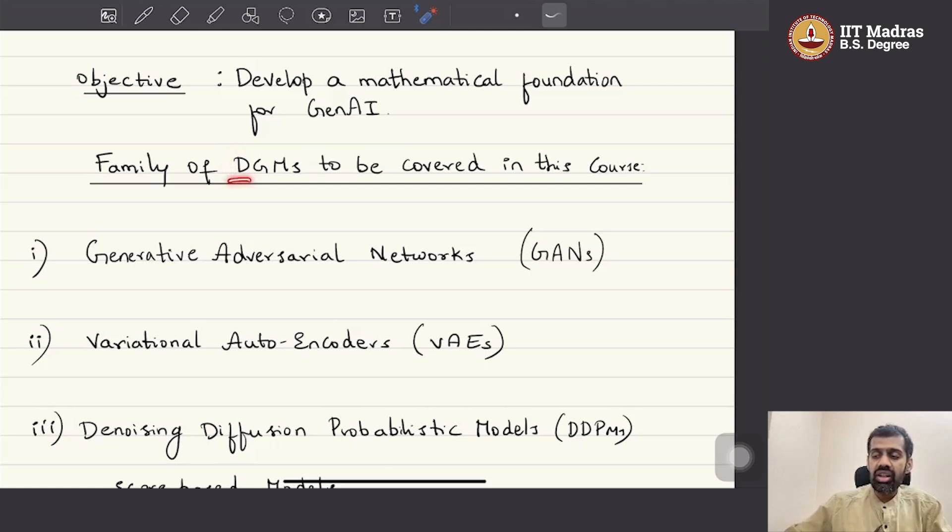The word Deep here signifies that most of these models have a neural network component to it and these are typically the deep neural networks. So, that's why I choose to call these Deep Generative Models. These are the family of Deep Generative Models that are to be covered in this course.